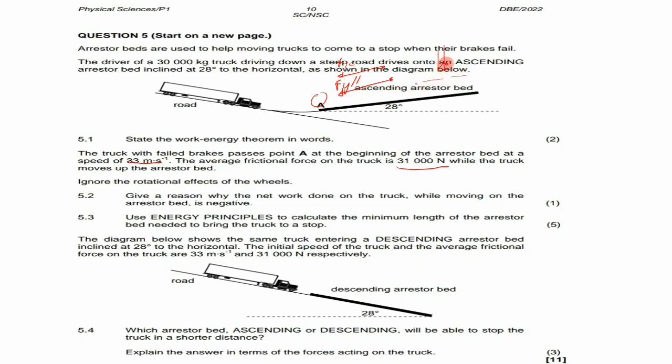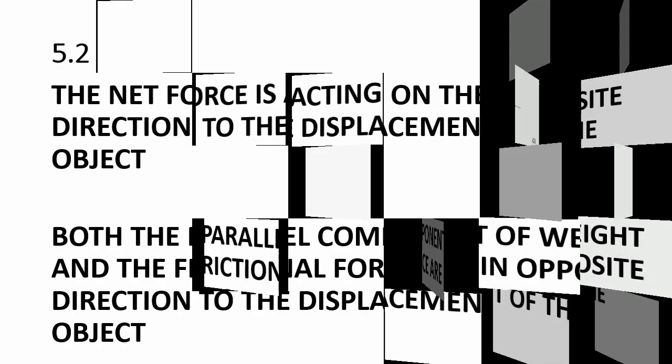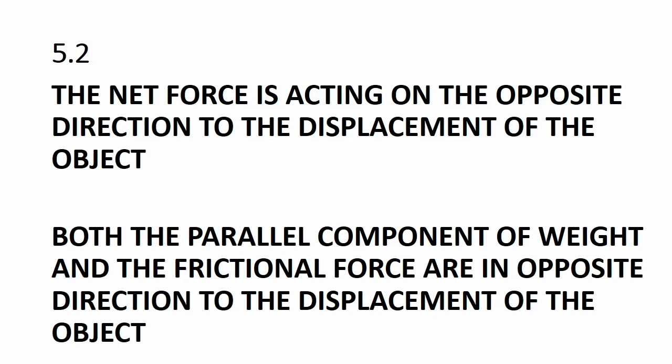Both forces are going down the slope and acting in the opposite direction to the displacement of the truck. The displacement of the truck is up the slope but the net forces are down the slope, so we have negative work done on the truck. Both the parallel component of weight and the frictional force are in opposite directions to the displacement of the object.